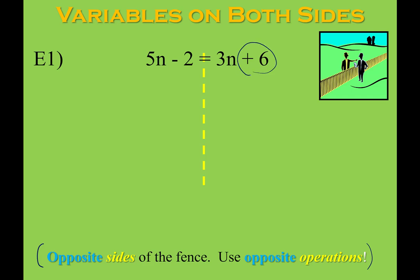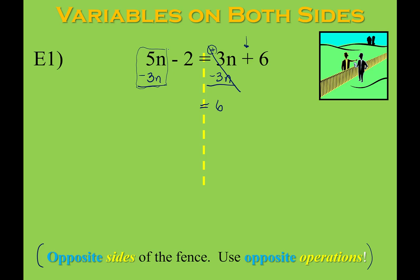The same way that I would eliminate this 6 by subtracting 6 from both sides to make that 6 disappear on the right, I'm going to do the same thing with the 3n. I can add or subtract it — it's connected to the 6 by addition, and this is a plus 3n. So the opposite of a plus 3n is a minus 3n. If I do it on one side, I have to do it on the other side. On the right side, my n's have now disappeared — they've gone to 0, and I'm left with just 6. On the left side, these are like terms: 5n minus 3n gives me 2n.